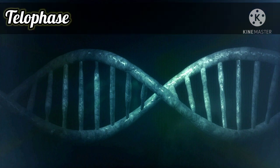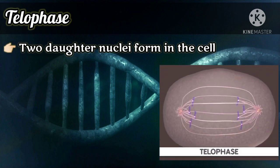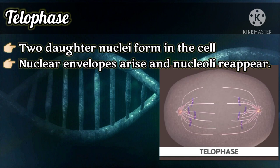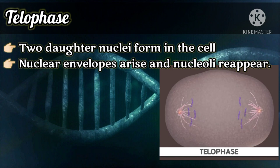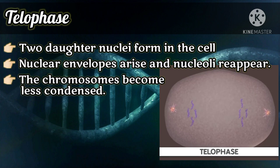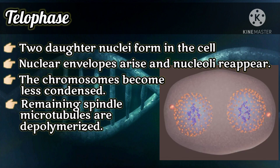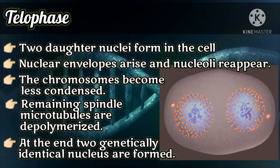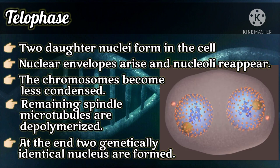The final phase of mitosis is telophase. Two daughter nuclei form in the cell. Nuclear envelopes arise from the fragments of the parent cell's nuclear envelope and endomembrane system. Nucleoli re-appear, and the chromosomes become less condensed. Any remaining spindle microtubules are depolymerized. Mitosis — the division of one nucleus into two genetically identical nuclei — is now complete.